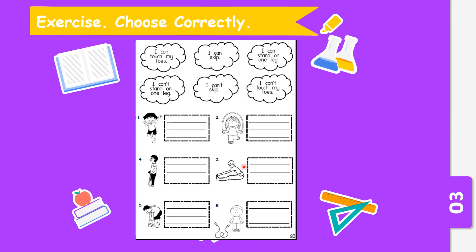Now I would like you to try to answer the questions. For example, number one — the options are: I can touch my toes, I can skip, I can stand on one leg, I can't stand on one leg, I can't skip, I can't touch my toes. The answer is: I can stand on one leg. Questions two, three, four, five, and six will be the homework for today.